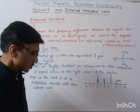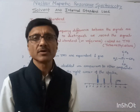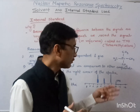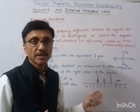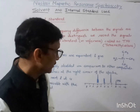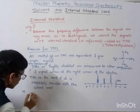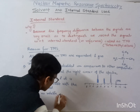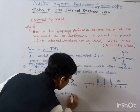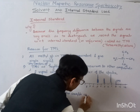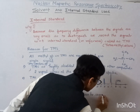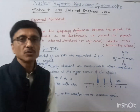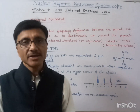Another reason is that if we are recording the spectra of a costly sample, we can recover the sample by evaporating the TMS, since TMS is a volatile compound. So TMS is volatile and the sample can be recovered. So this is about the type of solvent and internal standard used in NMR spectra. Thank you.